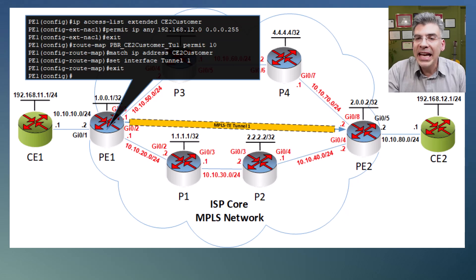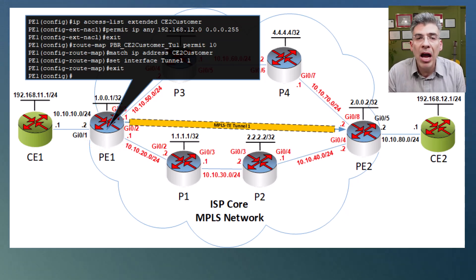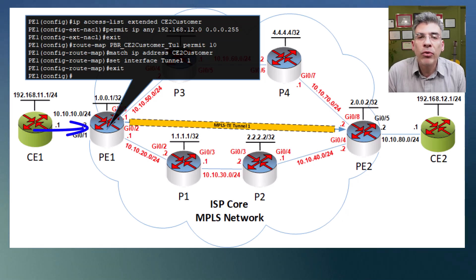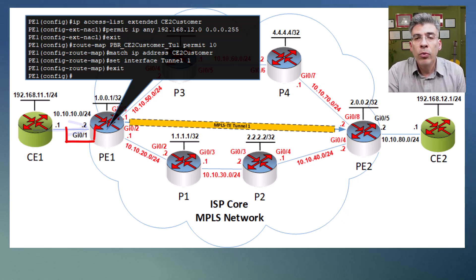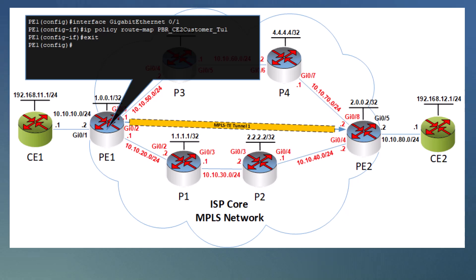Now we've created our ACL and our route map. We now have to apply it to the PE1 router. We apply it on the incoming interface from which we expect our packet to arrive. In this particular case, we want PBR to act upon any traffic that arrives from our CE1 router. So we must apply this to the CE1-facing interface, which is GigabitEthernet 0/1. We can apply the route map using the IP policy command on GigabitEthernet 0/1. By issuing this command and referencing our route map, we have now completed our PBR configuration to route our traffic down the tunnel interface.